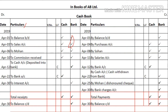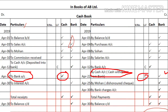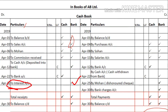If you withdraw cash from the bank, the bank balance decreases, so you write the amount on the credit side in the bank column, and cash balance increases so the same amount is written in the cash column. In the ledger folio you write 'C'. If the bank has allowed some interest on your balance, it is your income — write 'To Interest Account' and the amount in the bank column.